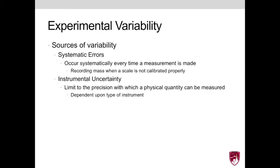The second source of error, which is probably the most common that we will encounter within this lab, is instrumental uncertainty. And this is limited to the precision in which a physical quantity can be made, and is dependent on the type of instrument.